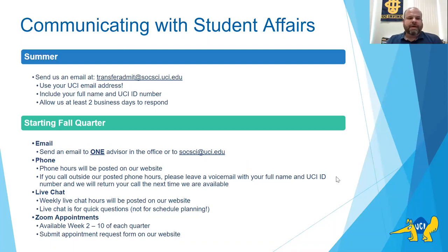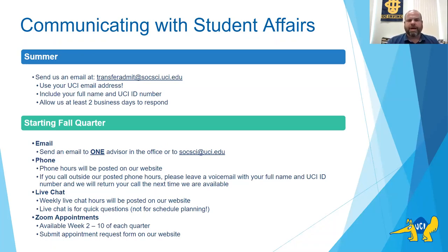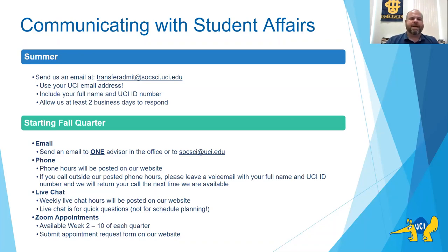Two important ways to communicate with our office. During the summer — now through the end of September — send us an email at transferadmit@socsci.uci.edu. Use your UCI email address, include your full name and UCI ID number, and allow at least two business days for a response since we have many new students coming in the fall.